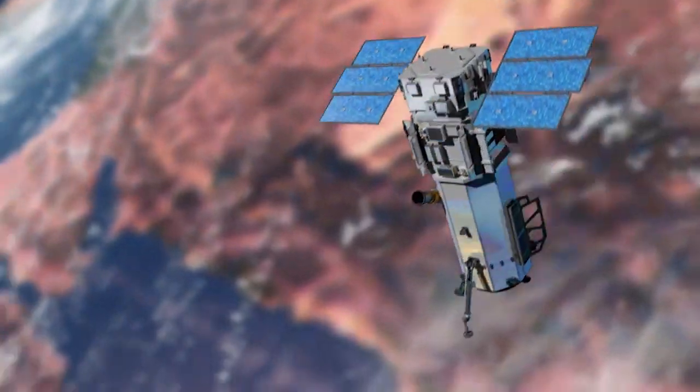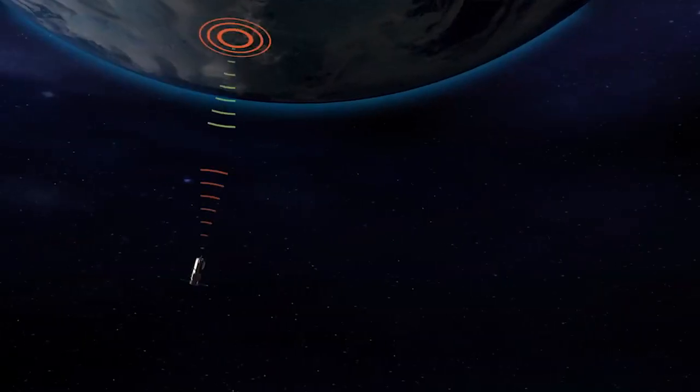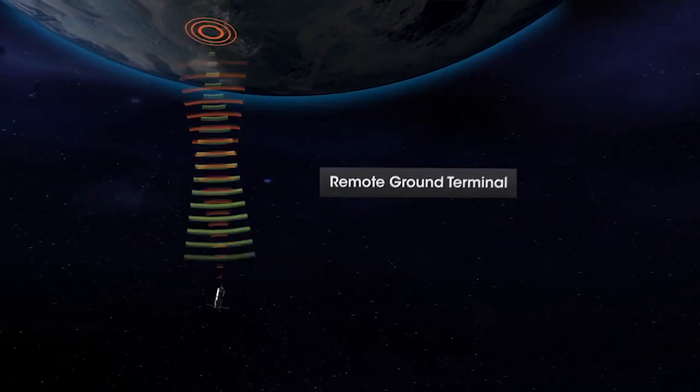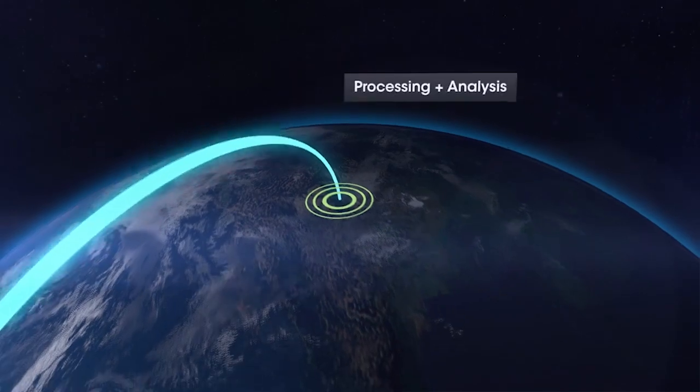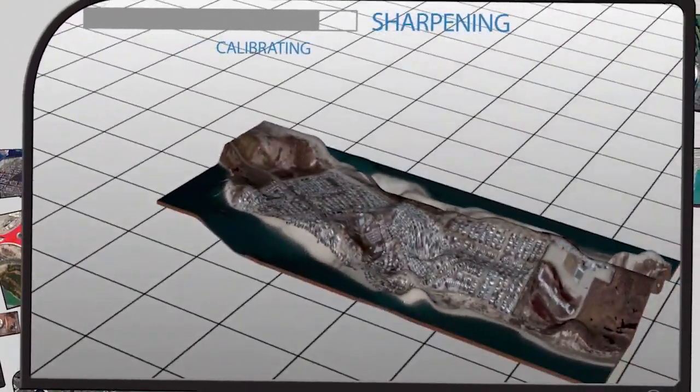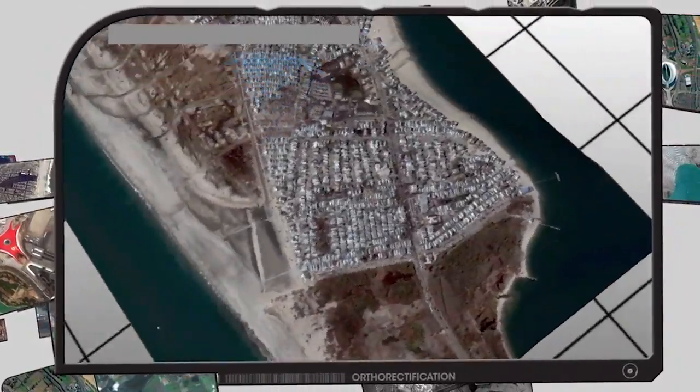But once the imagery is collected by the satellite, you're only halfway home. The data is then downlinked to ground stations around the planet, piped back to Colorado for processing and hosting, and made available to our users within hours of collection, enabling them to make timely, critical decisions.